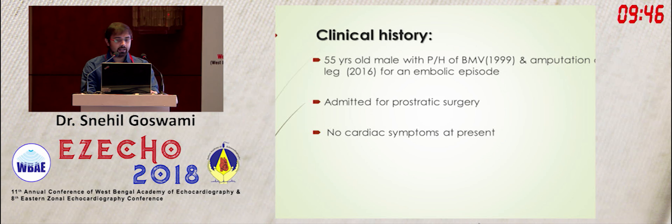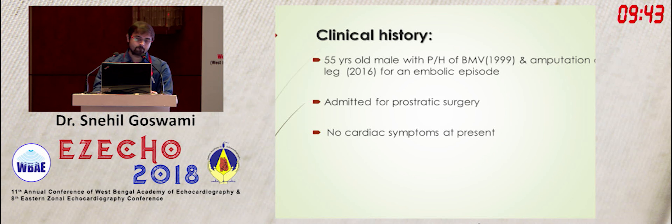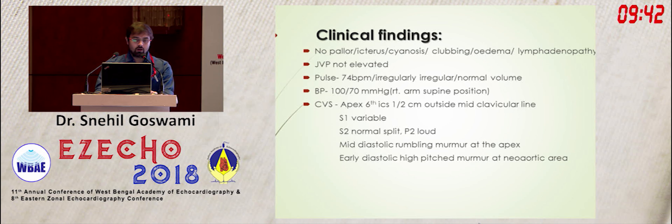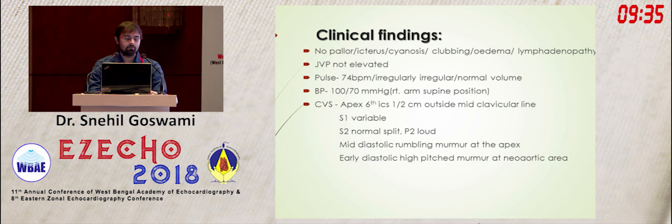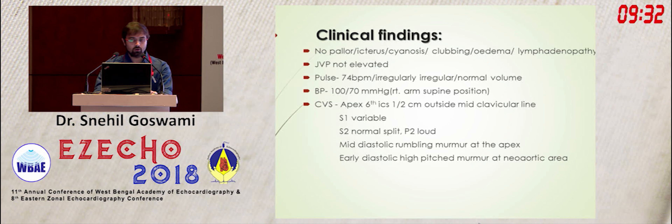From a cardiac point of view, he was asymptomatic at present. Clinically, he had no pallor, cyanosis, clubbing, edema, or lymphadenopathy. JVP was not elevated. Pulse was 74 beats per minute, irregularly irregular, normal volume.